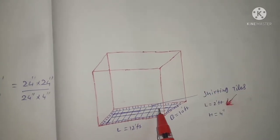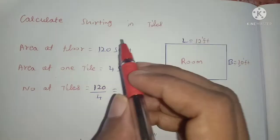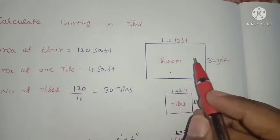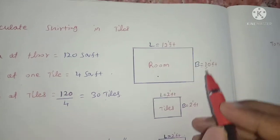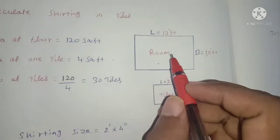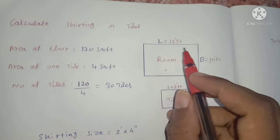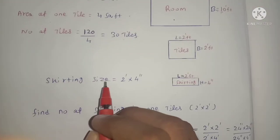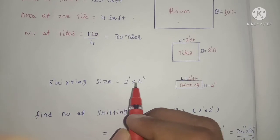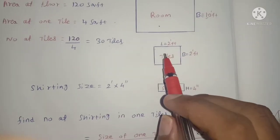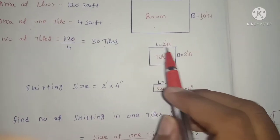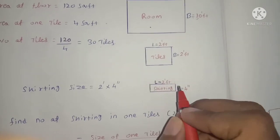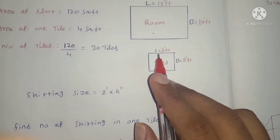How to calculate this? The number of floor tiles is 30. The skirting tiles have a size of 4 inches. So the skirting tile dimensions are 2 feet by 4 inches.